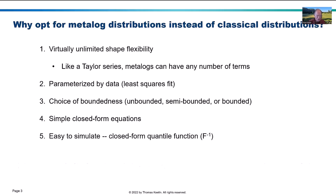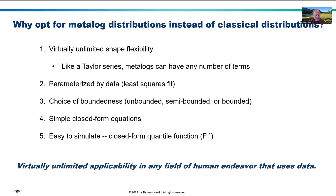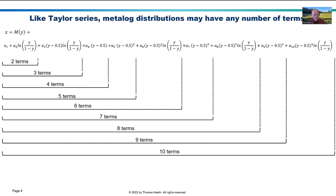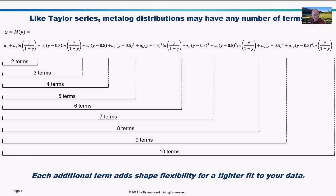The Metalogs have virtually unlimited applicability, not just in risk management but in any field of human endeavor that uses data. The Metalog equation, shown at the top of this slide, is like a Taylor series. You can use just the first two terms, in which case it's the logistic probability distribution exactly, but you can use three terms or four terms. You can expand to any number of terms you want, and each additional term adds further flexibility.